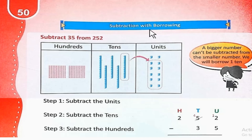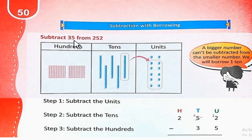The Smart School. Grade 2. Mathematics. Subtraction with Borrowing. Subtract 35 from 252.